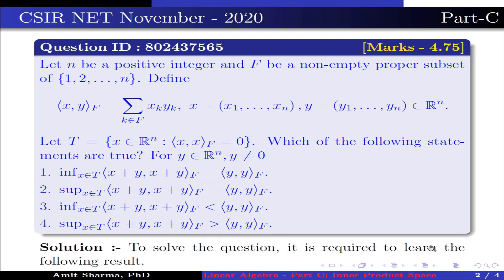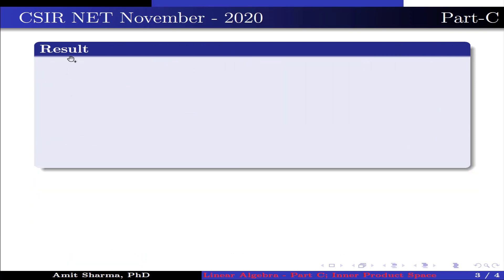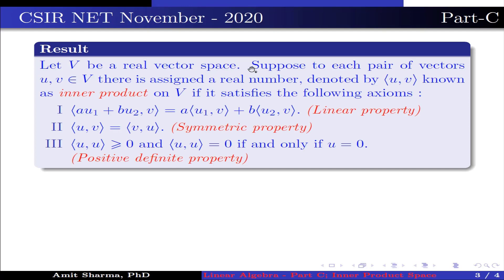To solve the question, it is required to learn the following result. Let V be a real vector space. Suppose to each pair of vectors u, v belonging to V, there is assigned a real number denoted by ⟨u, v⟩ known as inner product on V if it satisfies the following axioms. Axiom 1: ⟨au1 + bu2, v⟩ = a⟨u1, v⟩ + b⟨u2, v⟩ — the linear property. Axiom 2: ⟨u, v⟩ = ⟨v, u⟩ — the symmetry property. Axiom 3: ⟨u, u⟩ ≥ 0 and ⟨u, u⟩ = 0 if and only if u = 0 — the positive definite property.